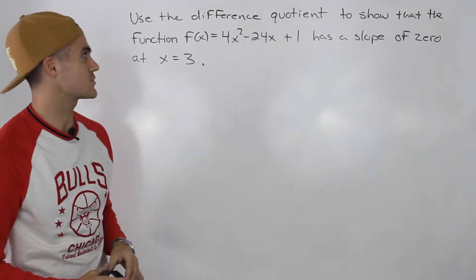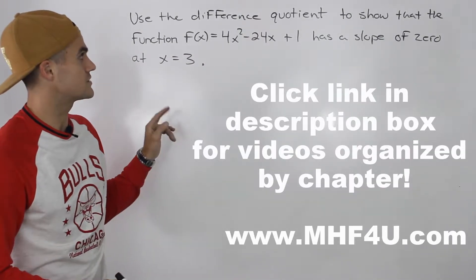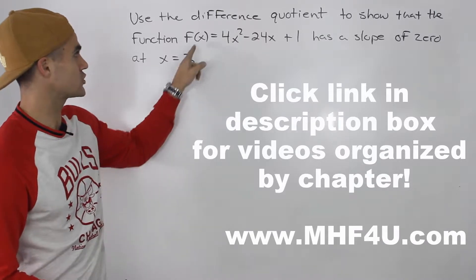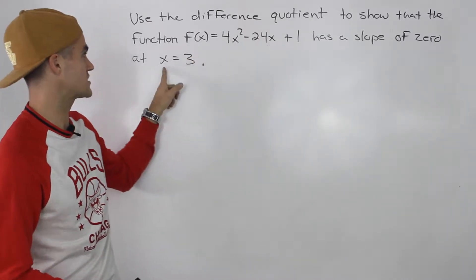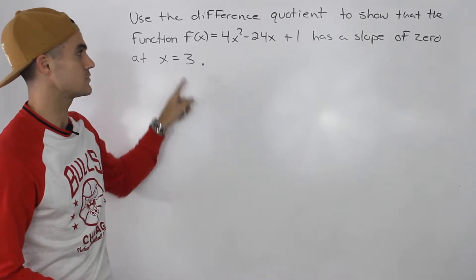Welcome back, everybody. Moving on to the next question on the test, we have to use the difference quotient to show that the function f(x) = 4x² - 24x + 1 has a slope of 0 at x = 3.